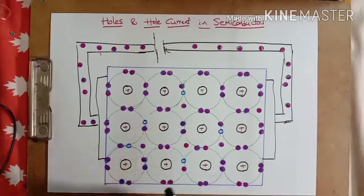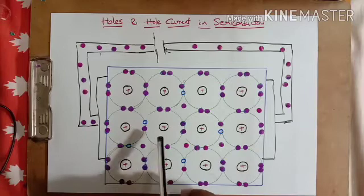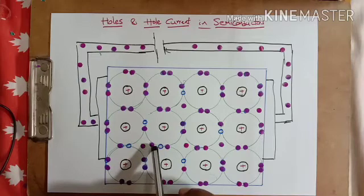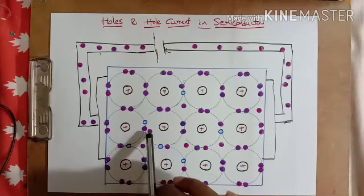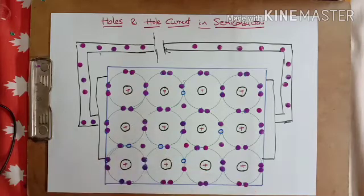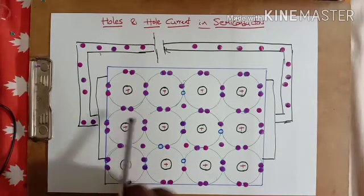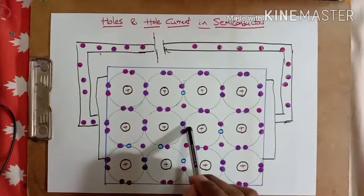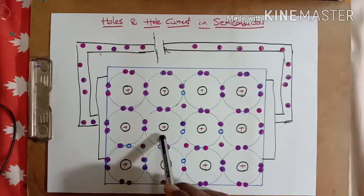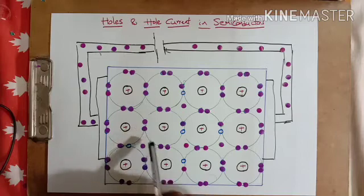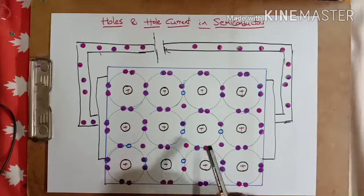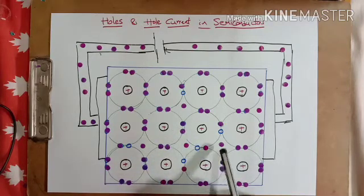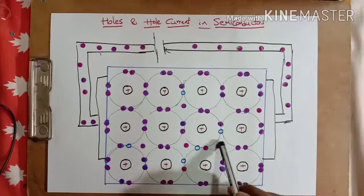There is continuous generation and recombination happening. A bond breaks and that electron fills a nearby vacancy made by another electron that broke its bond. The vacancy — the hole — effectively moves: it was at one position, and after an electron fills it, the hole appears at the new location where that electron came from.